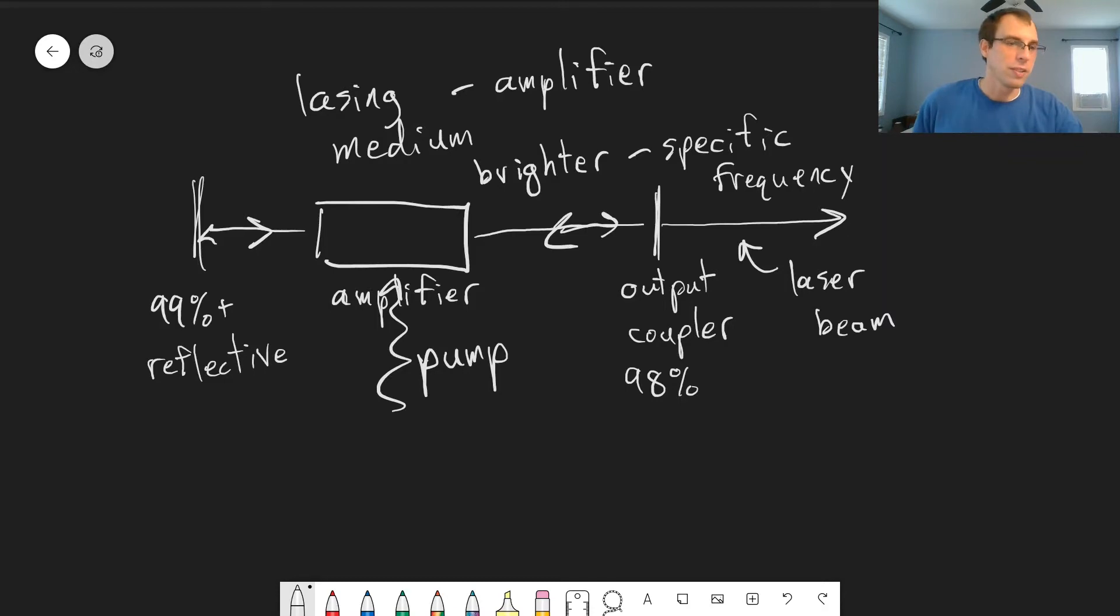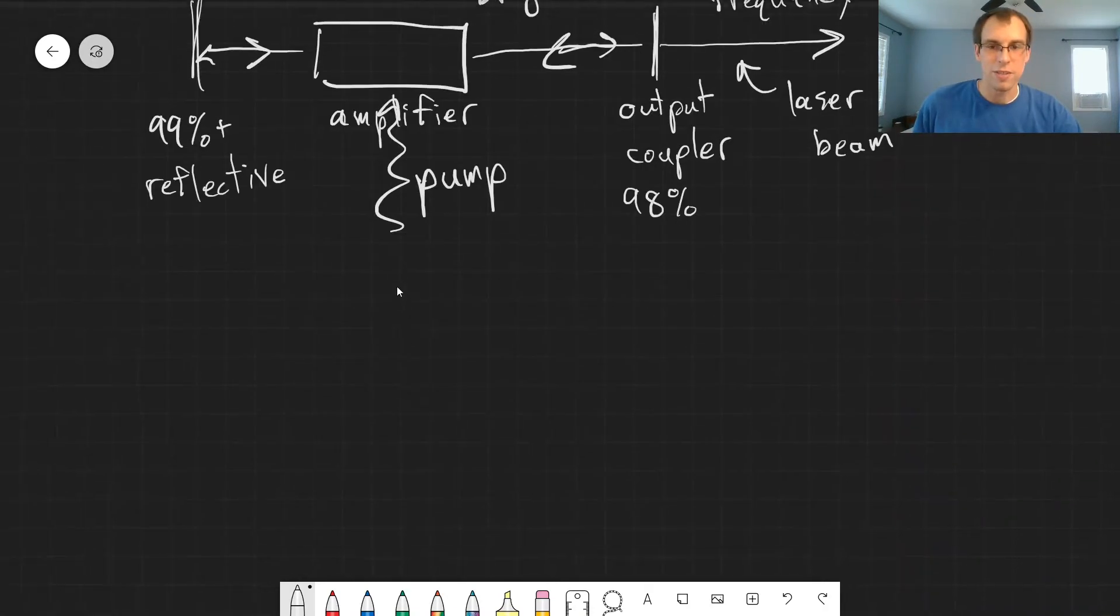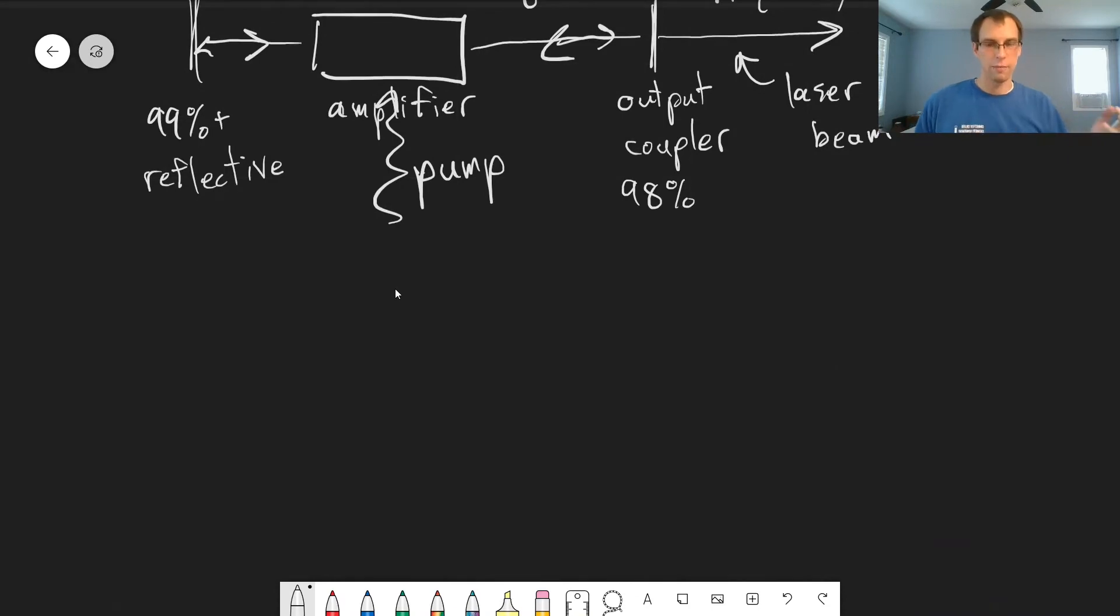And what's so useful about this is that we get some very distinct properties from lasers that you don't get with other light sources like a light bulb or something like that. So property number one, lasers are highly directional, meaning it's beams of light.